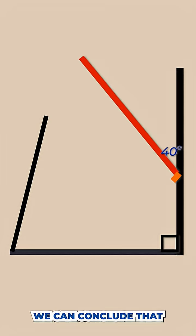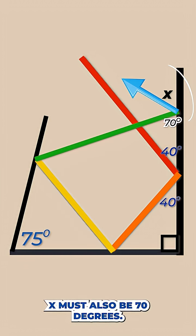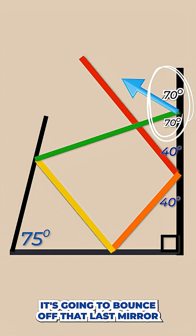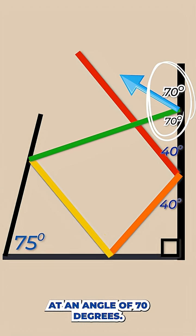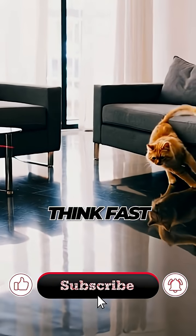So once again, using the law of reflection, we can conclude that X must also be 70 degrees. It's going to bounce off that last mirror at an angle of 70 degrees. That's this week's Think Fast. Hope you got it. We'll see you next week.